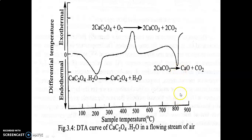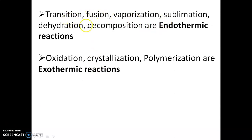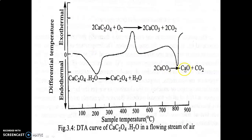From approximately 420 to 660 degrees Celsius, the compound is again stable. But from 660 up to 840 degrees Celsius, the compound shows a downward peak, which means an endothermic reaction is taking place. This is mainly due to the decomposition of calcium carbonate, which produces calcium oxide and carbon dioxide. So from this single differential thermogram, we can identify all the changes that occur for calcium oxalate: dehydration (endothermic), oxidation (exothermic), and decomposition (endothermic). Thank you.